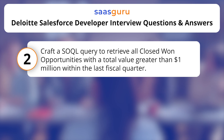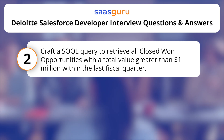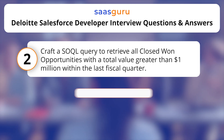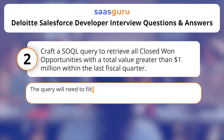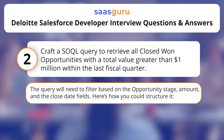Craft a SOQL query to retrieve all closed-won opportunities with a total value greater than one million within the last fiscal quarter. The query will need to filter based on the opportunity stage, amount, and the close date fields. Here's how you could structure it.